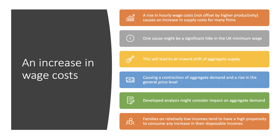Our fourth example is an increase in wage costs. Assume the hourly wage cost increases — perhaps caused by a rise in the minimum wage — and assume there is no commensurate improvement in productivity, so wages go up but output per worker flatlines. This causes an inward shift of aggregate supply because unit labour costs have increased, leading to a contraction down the aggregate demand curve and a rise in the general price level.